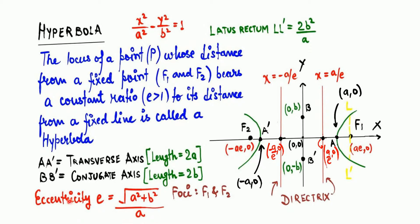This eccentricity value will always be greater than 1. If the eccentricity value is less than 1, it is an ellipse. If it equals 1, it is a parabola, and if it is greater than 1, it is a hyperbola.